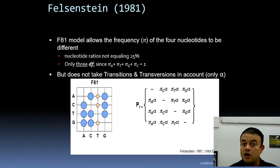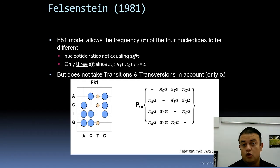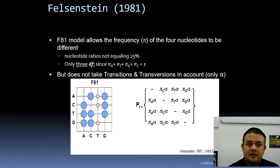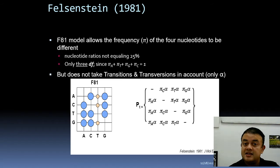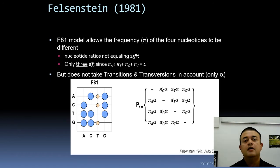Because the total frequency must equal one, if we know three of the four nucleotide frequencies, the fourth is determined automatically — just as knowing there are 20 girls in a class of 32 tells you there are 12 boys. So the degree of freedom is n minus one: four minus one equals three for Felsenstein's F81 model.